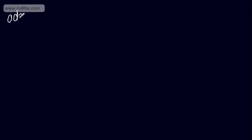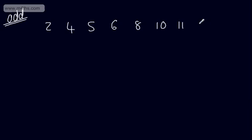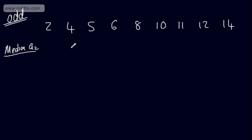Now I'm going to add one more value to create an odd data set. So we had 2, 4, 5, 6, 8, 10, 11, and 12 — and I'm now going to add 40. In this particular case we've got nine observed values, or nine items in our data set. The median, Q2, is a central measure — a measure of location — and we want to find the middle value.